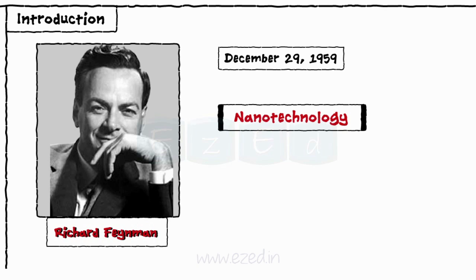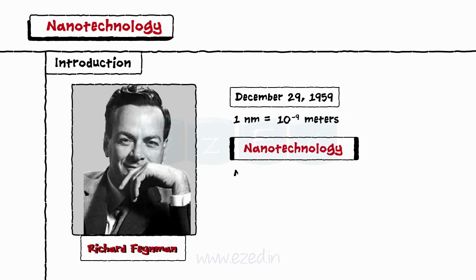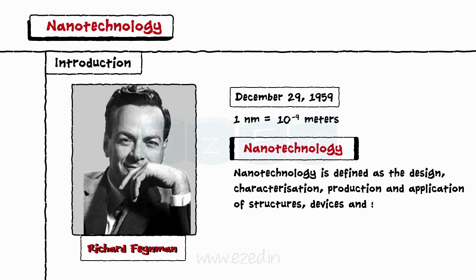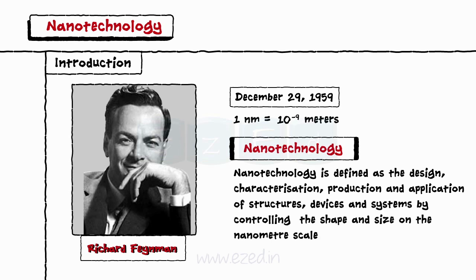Nano is a very small range. 1 nanometer is equal to 10 raised to minus 9 meters. Nanotechnology is defined as the design, characterization, production, and application of structures, devices, and systems by controlling the shape and size on the nanometer scale.